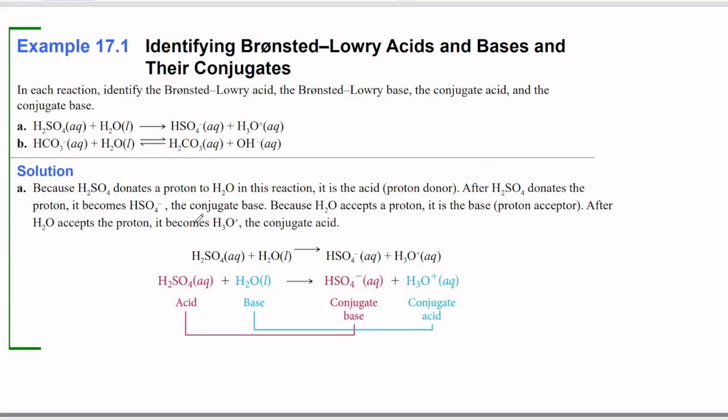And you will see this again in organic chemistry. So for A, we have H2SO4, sulfuric acid, plus water yields HSO4- and H3O+. So this is hydrogen sulfate plus H3O+, which is the hydronium ion.